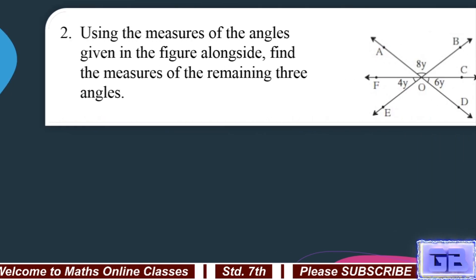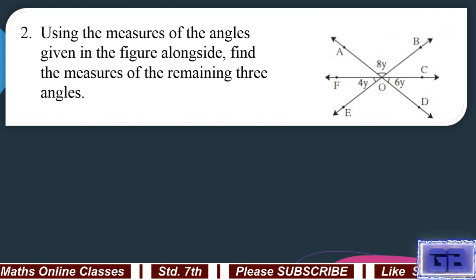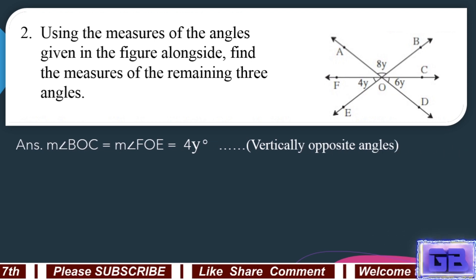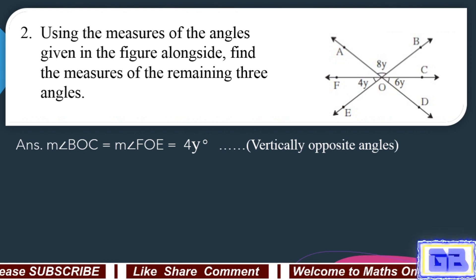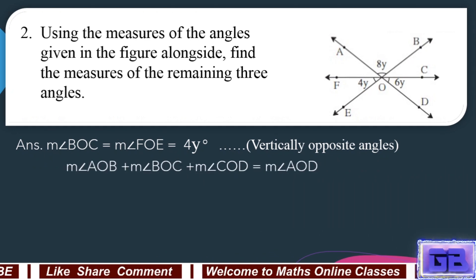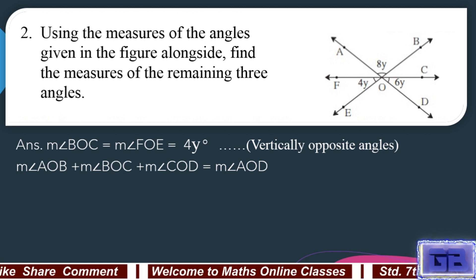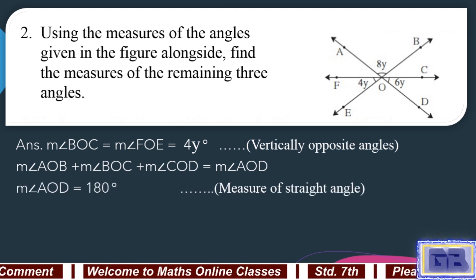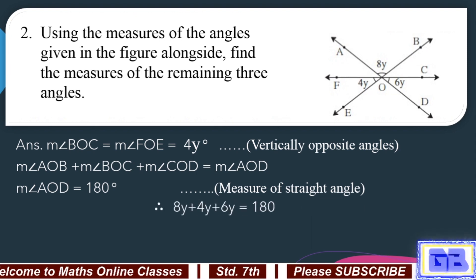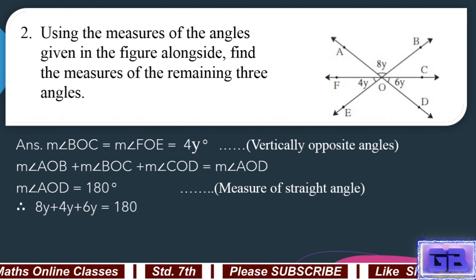Question number 2: Using the measures of the angles given in the figure, find the measures of the remaining three angles. Measure of angle BOC equals measure of angle FOE equals 4y degrees, as they are vertically opposite angles. Measure of angle AOB plus measure of angle BOC plus measure of angle COD equals measure of angle AOD, and measure of angle AOD equals 180 degrees as it is a straight angle.